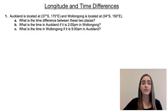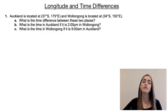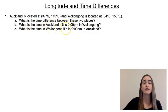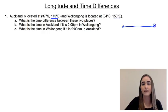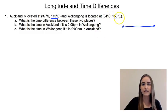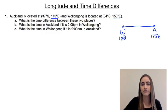Our first problem: Auckland is located at 37 degrees south and 175 degrees east, and Wollongong is located at 34 degrees south and 150 degrees east. Part A asks us to calculate the time difference between the two places. Latitude doesn't matter here — it's the difference in longitude that tells us the difference in time. Since Auckland is at 175 degrees east and Wollongong is at 150 degrees east, Auckland is further east. Let's draw a quick diagram with Auckland to the east and Wollongong to the west.